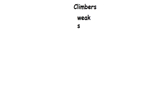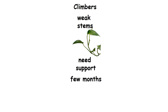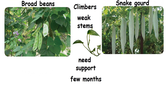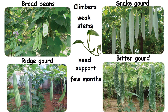Climbers. Climbers have weak stems and they need support to climb and grow. Some of them live only for a few months. Examples: broad beans, snake gourd, ridge gourd and bitter gourd.